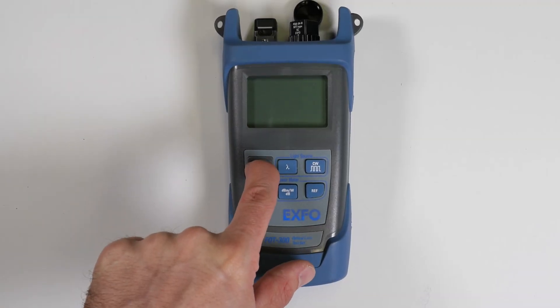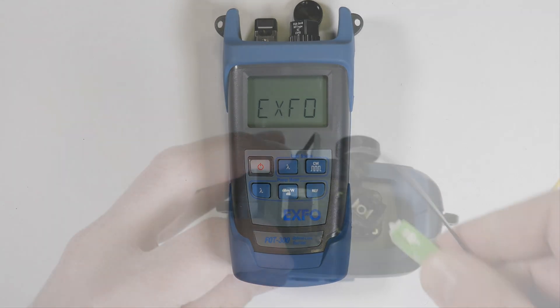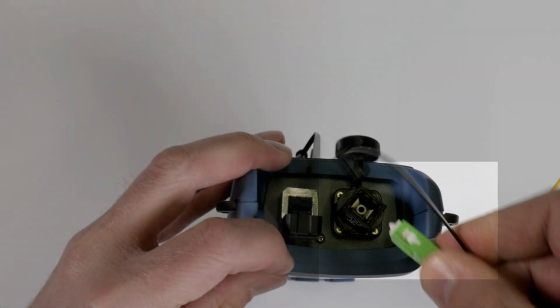Press the power button to turn it on. Inspect the fiber ends with a fiber inspection probe and clean if needed. Connect the fiber to the power meter of the FOT300 using the appropriate adapters.